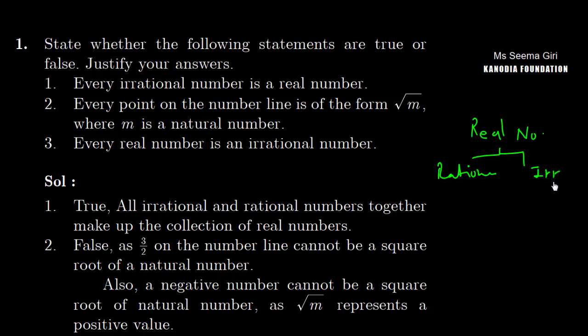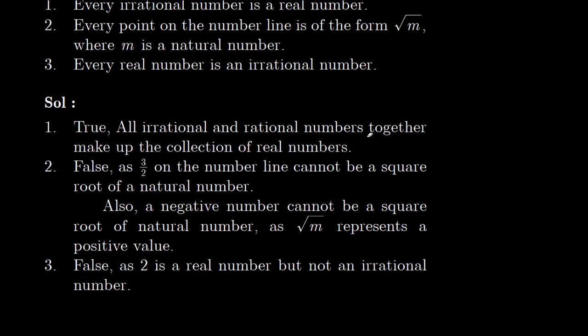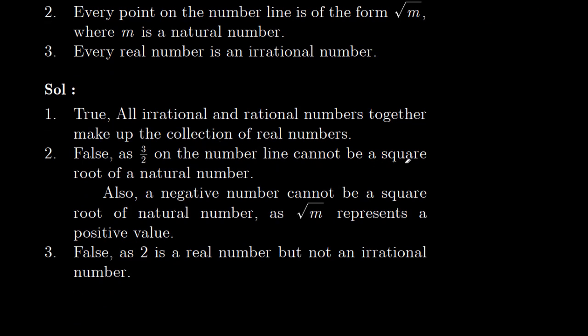Now the second part is every point on the number line is of the form under root m, where m is a natural number. So it is said that every point on the number line is in the form of under root m. No, this is not necessary. So this is false. As three upon two on the number line cannot be a square root of a natural number. Also, a negative number cannot be a square root of a natural number, as under root m represents a positive value.